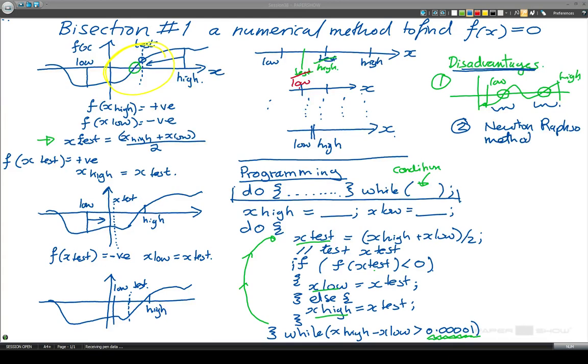A second disadvantage is the Newton-Raphson method is faster, it is much much faster, but Newton-Raphson needs df by dx. So we need to be able to differentiate, or we need to get f prime of x. We need to be able to differentiate the function to be able to use the Newton-Raphson method. And what this means is actually an advantage.